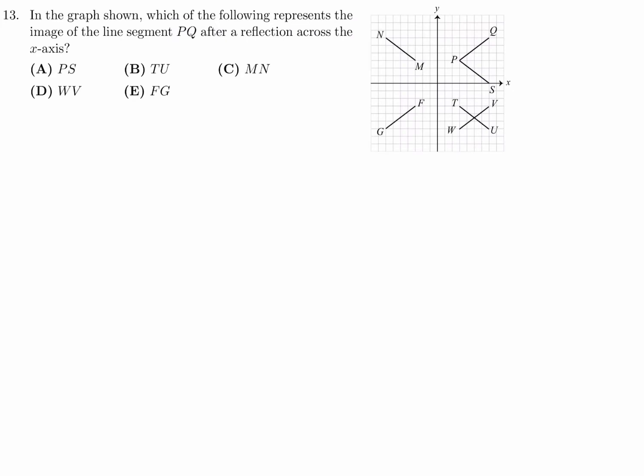In the graph shown, which of the following represents the image of the line segment PQ after a reflection across the X-axis? Here is the X-axis. P looked like it was three up. So when you reflect it, P will be three down. So it will be where the T is. Q was one, two, three, four, five, six up. So when you reflect it, it will be six down. And that's where the U is. So the reflection will basically be TU. And that for number 13 would be B.